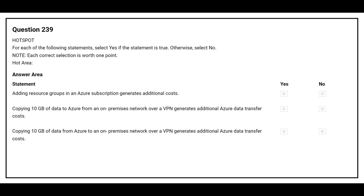Question number 239. For each of the following statements, select yes if the statement is true, otherwise select no. The first statement is: adding a resource group in an Azure subscription generates additional cost. The correct answer is no. The second statement is: copying 10 GB of data to Azure from an on-premises network over the VPN generates additional Azure data transfer cost. The correct answer is no. The correct answer is yes.